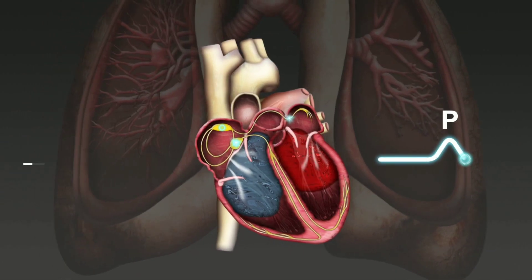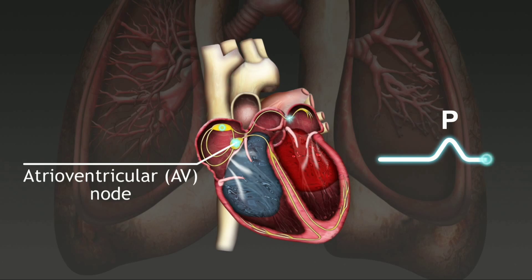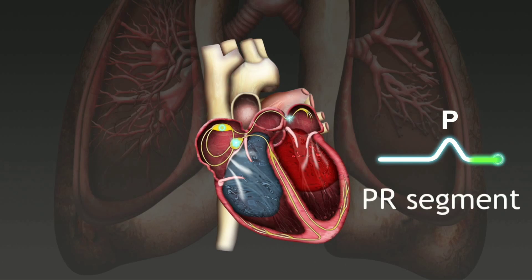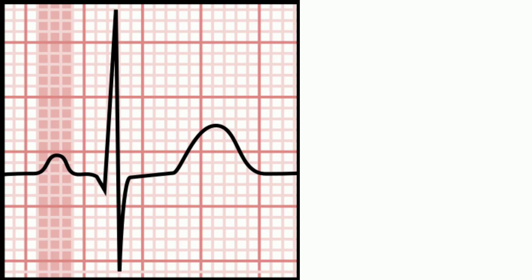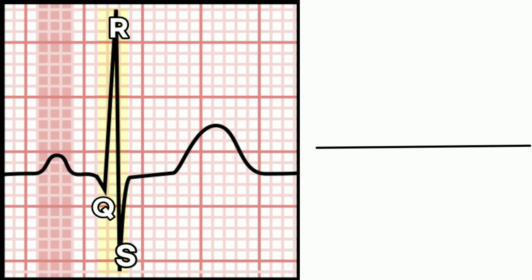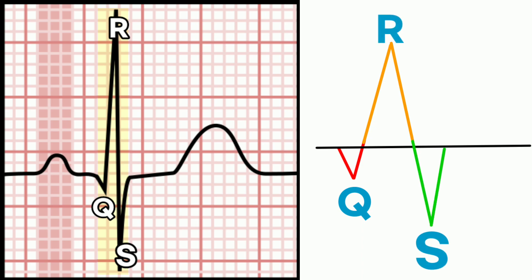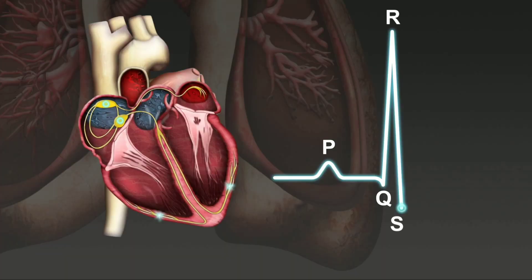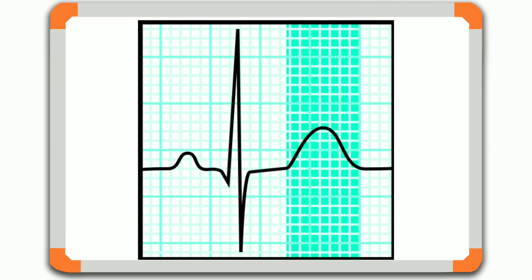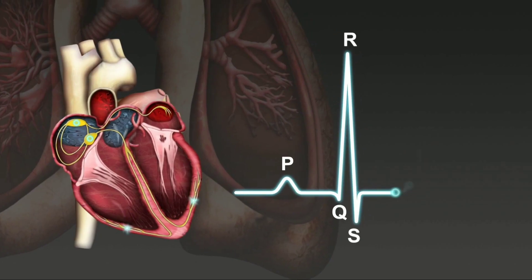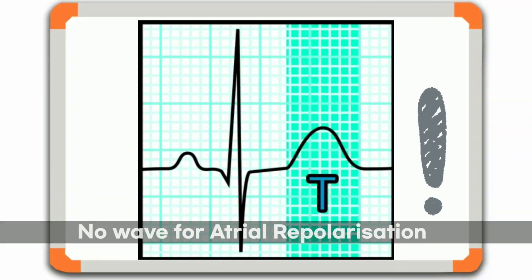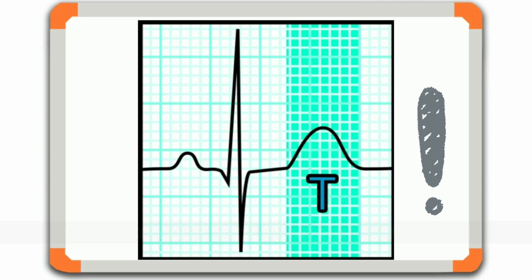After the P wave, the impulse passes through the AV node, producing a flat section called the PR segment — it's flat because no current is flowing through the cardiac muscle cells. PR segment is followed by ventricular depolarization, denoted by the QRS complex: a negative Q wave, a positive R wave, and another negative S wave. The ventricles then remain depolarized momentarily, giving rise to another flat section called the ST segment. After that, the ECG shows the final positive deflection — the T wave, which represents ventricular repolarization. There is no separate wave for atrial repolarization, because the atrial musculature is not thick enough to produce one.